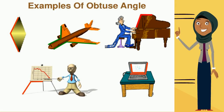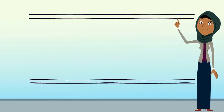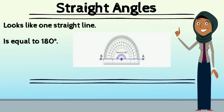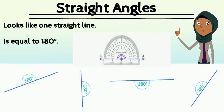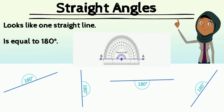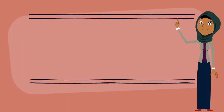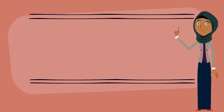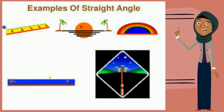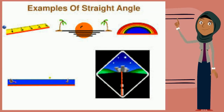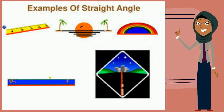The other type of angles are called straight angles. They look like one straight line and are equal to exactly 180 degrees. Have a look at some examples here. These are things in our everyday life that have straight angles — they look like one straight line.